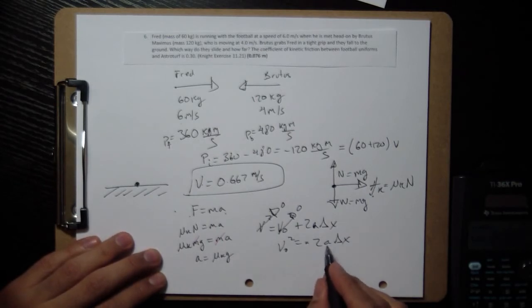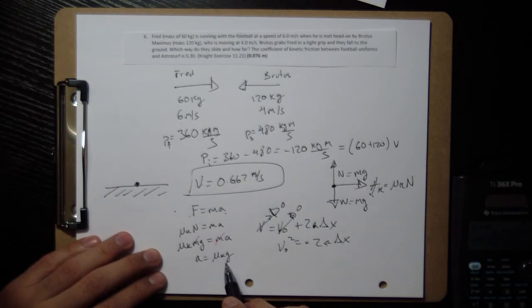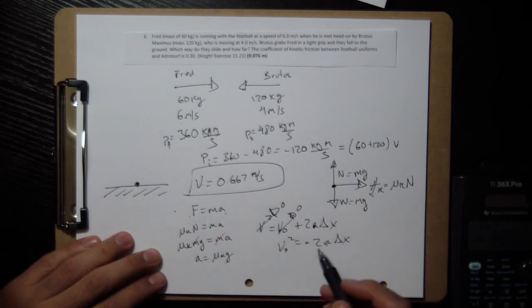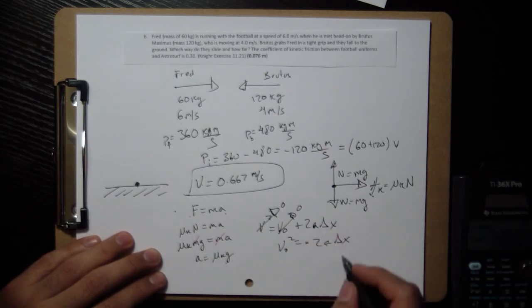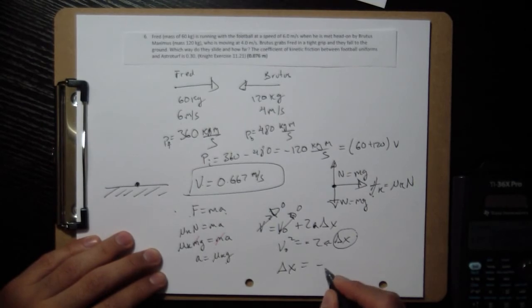But I think our acceleration is actually should be negative because... or no, wait, I'm not even sure. Something is negative. Delta x is negative. Yeah, because we go to the left. So our delta x will come out negative. And that's going to make sense. Oh, I'm not taking a square root, so it doesn't even matter. Anyway, we're solving for delta x. Delta x equals negative v_naught squared over 2a.